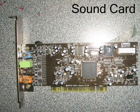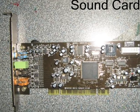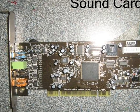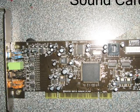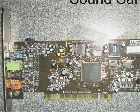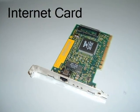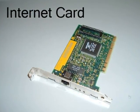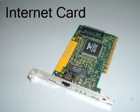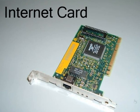This is the sound card. This particular sound card can control Dolby surround sound, like the ones you have in the cinema. This is the internet card. The internet card allows you to have access to the internet via an ethernet port, as you can see there.